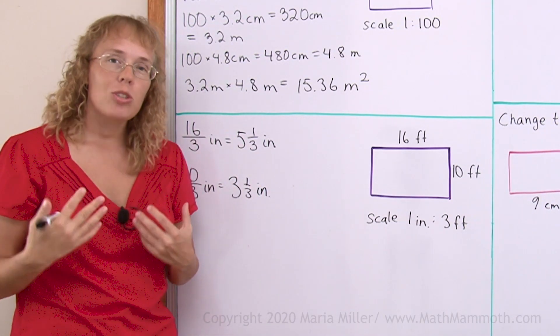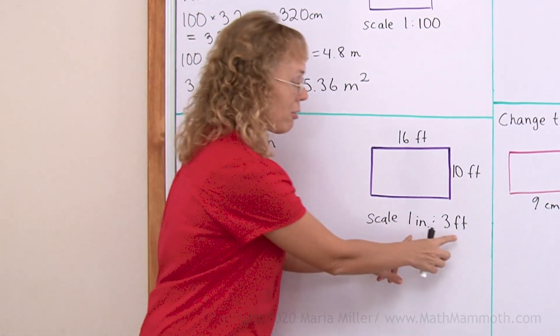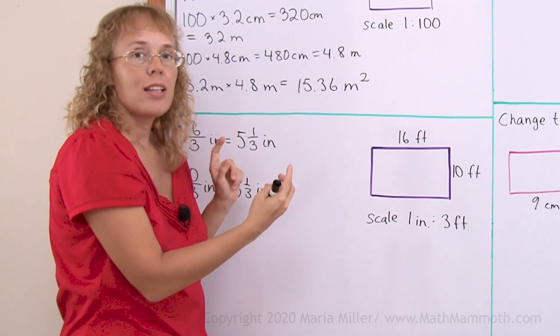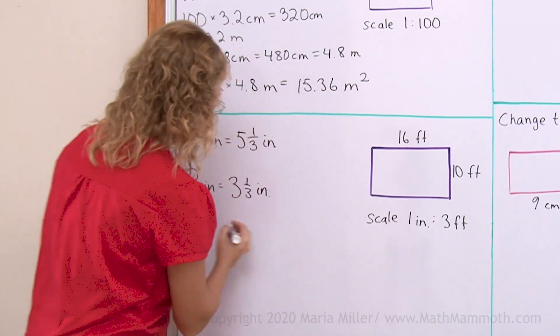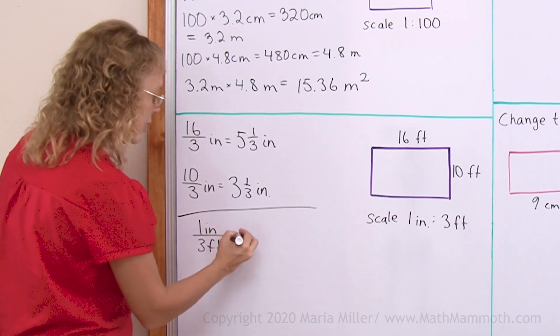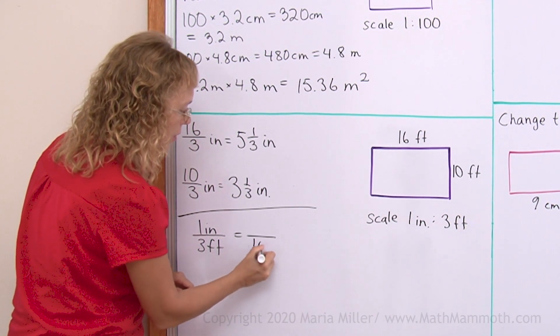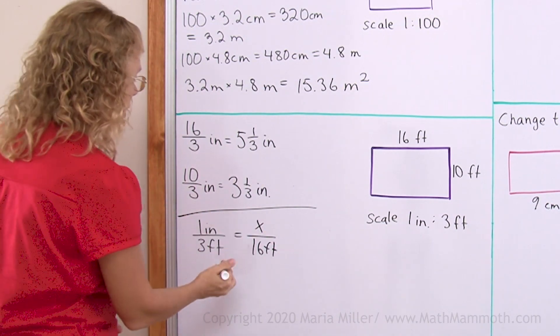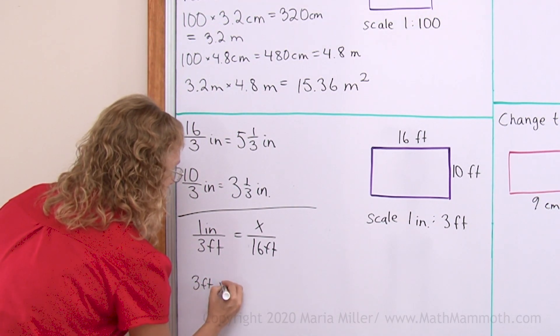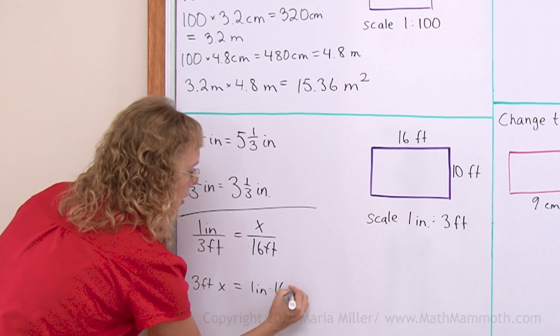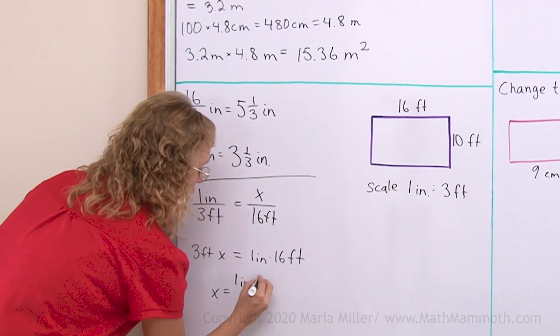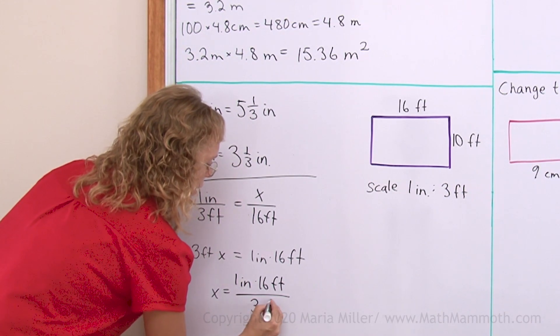I'll also show you another way to solve this, which is to use a proportion, because we have a ratio here. This side and the corresponding side are in the same ratio. They are in proportion. So this is my one ratio, which is 1 inch to 3 feet, paper to reality. And so the reality is 16 feet and the paper is unknown. Then you would get 3 feet times x equals 1 inch times 16 feet. Now divide both sides by 3 feet. So x equals 1 inch times 16 feet divided by 3 feet.